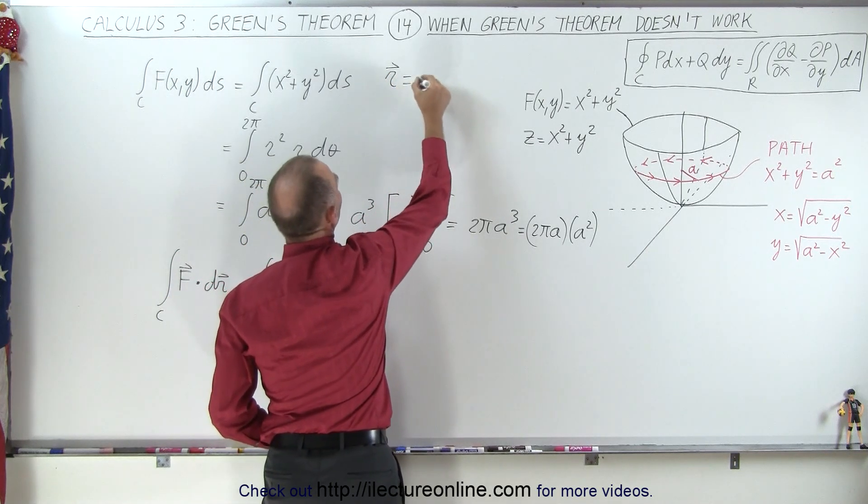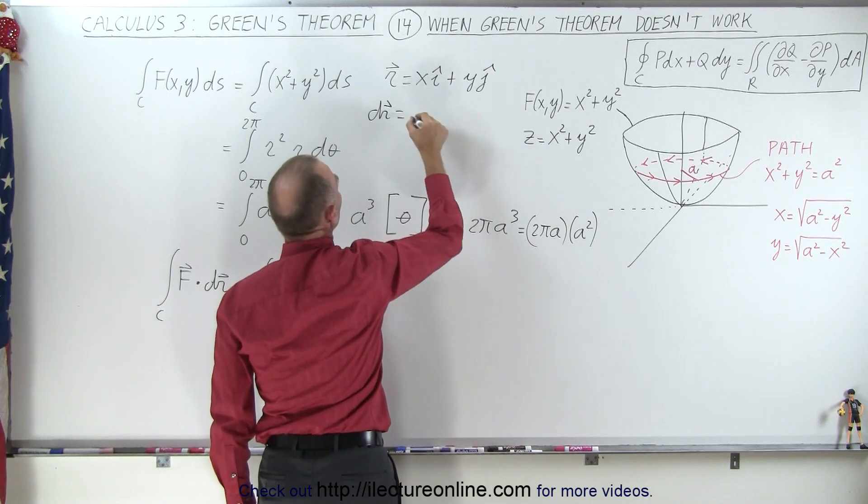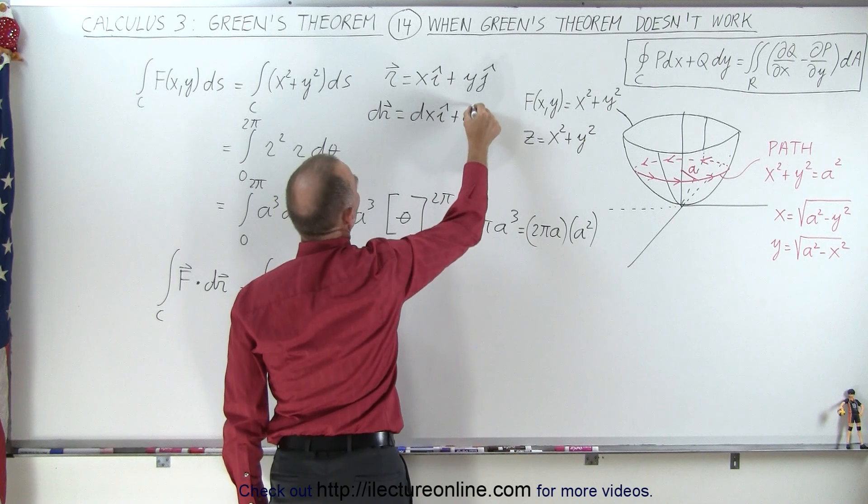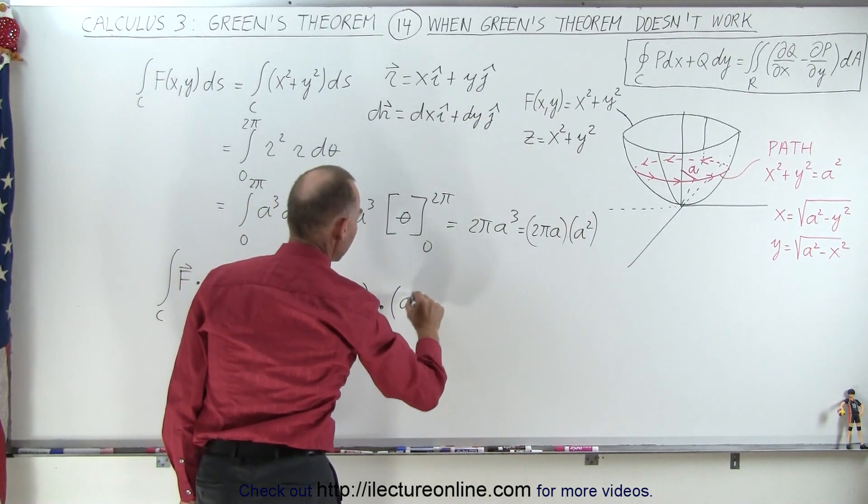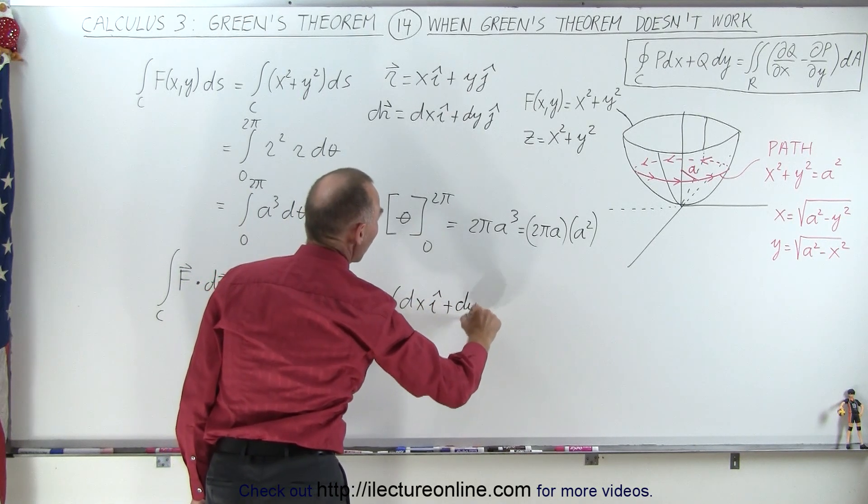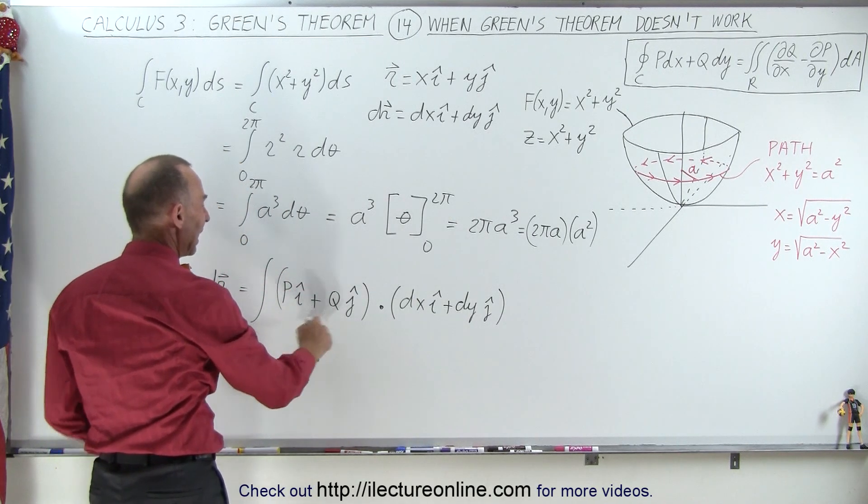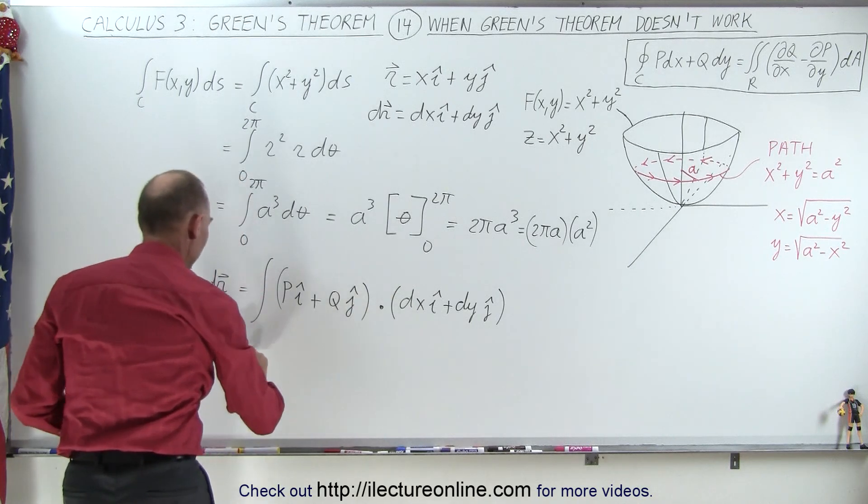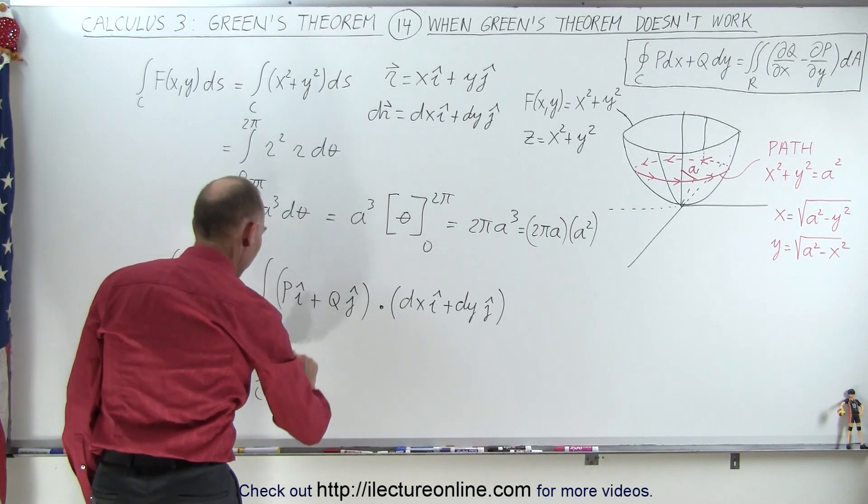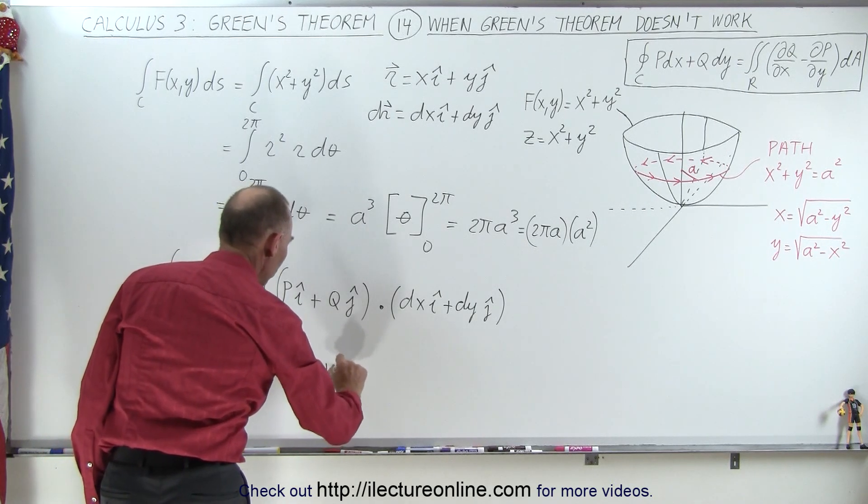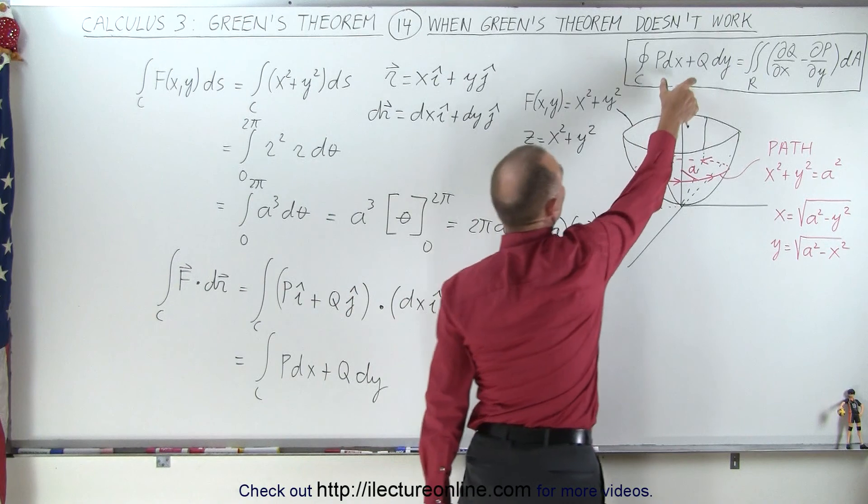So this would be the vector field expressed like this, dotted with dr. Now, when r is defined as x in the i direction plus y in the j direction, then the differential dr equals dx in the i direction plus dy in the j direction. So it's the dot product with dx in the i direction plus dy in the j direction. And so now, when you go ahead and find the dot product of that, this would then be equal to the integral of p times dx plus q times dy.